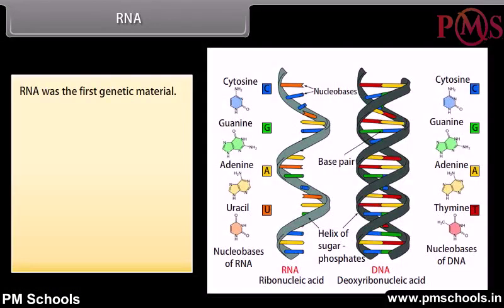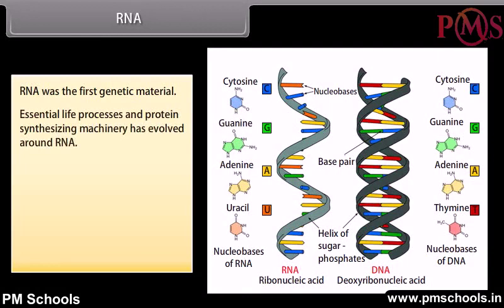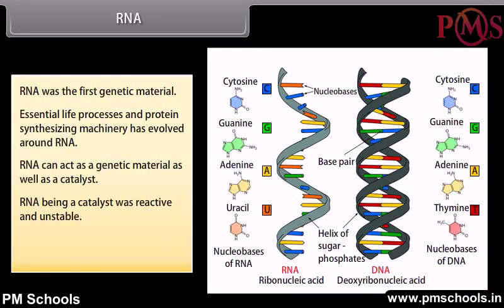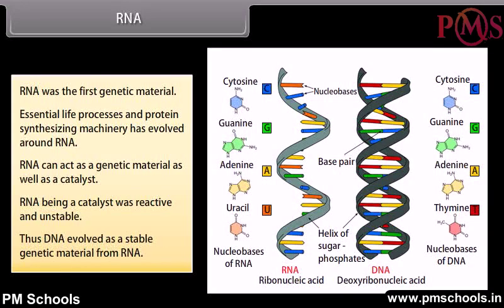RNA was the first genetic material. Essential life processes and the protein synthesizing machinery evolved around RNA. RNA can act as a genetic material as well as a catalyst. However, RNA being a catalyst was reactive and unstable. Thus, DNA evolved as a more stable genetic material from RNA.